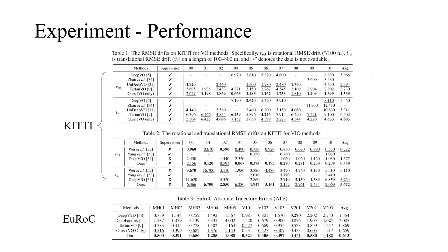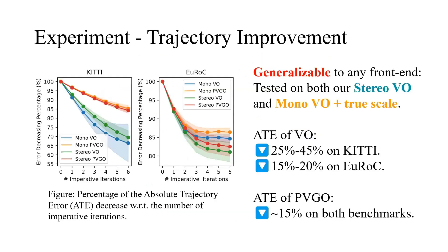In experiments, we evaluate our method on both the KITTI and the EuRoC benchmarks, which encompass distinct motion patterns. Results show that our method achieves state-of-the-art performance without using any ground-truth label in these datasets. This figure shows how much the trajectory error decreases through imperative learning. To demonstrate the generalizability, we use both our stereo VO and monocular VO with ground-truth scale as the front-end. In both settings, significant accuracy improvements are observed for both front-end and back-end on both datasets.